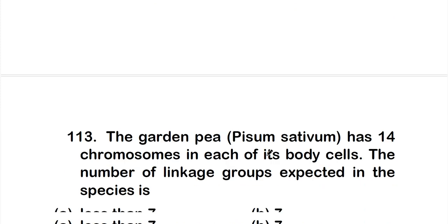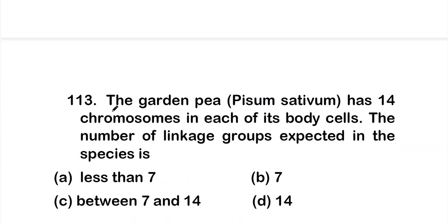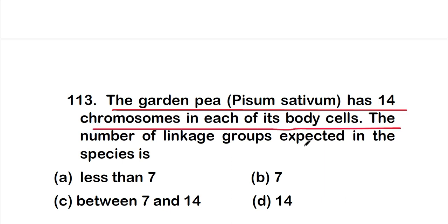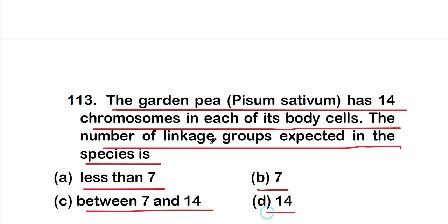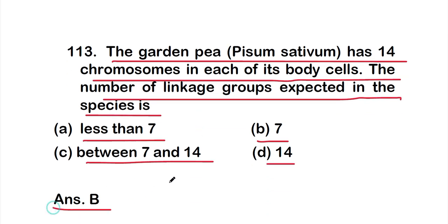Question 113: the garden pea, Pisum sativum, has 14 chromosomes in each of its body cells. The number of linkage groups expected in the species is: Option A less than 7, Option B 7, Option C between 7 and 14, Option D 14. The right answer is Option B — 7 linkage groups, since the haploid number is 7.